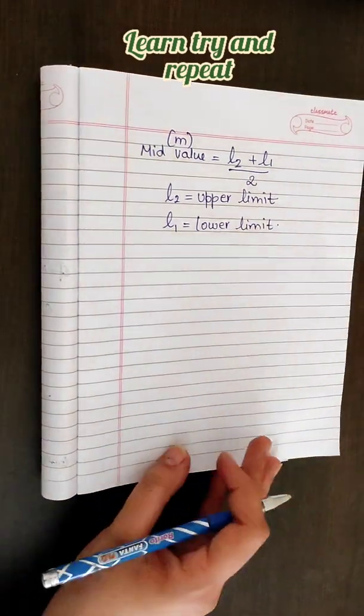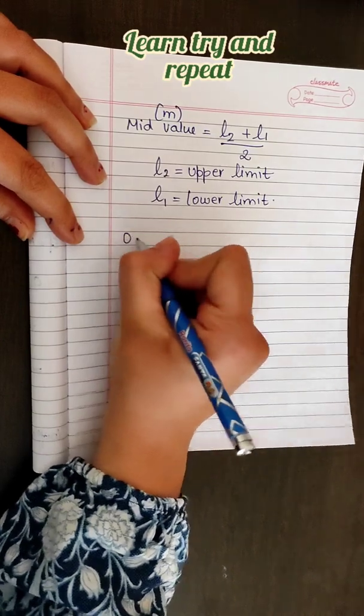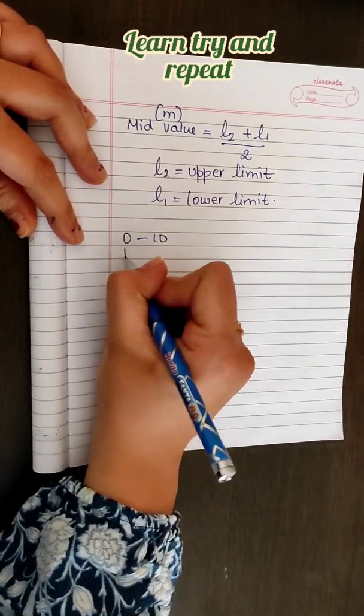Let us understand with an example. This is my class interval: 0 to 10 and 10 to 20.